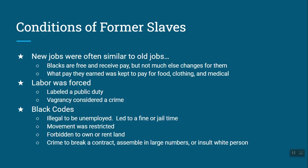With these black codes, it was illegal to be unemployed. If unemployed, you went to jail, and to get out you had to pay a fine. Former slaves who had no money couldn't pay, so former slave owners would pay to get them out, and then that person had to work for the former owner to pay off the debt. Some black codes restricted movement, forbade owning land — you could only rent in some cases, and others even said you couldn't rent land. It was a crime to break a contract, to assemble, or to insult a white person. These codes were very nebulous and easy to violate. The whole purpose was to try to regain control of society.